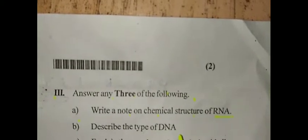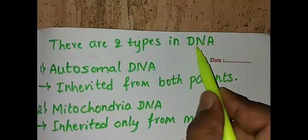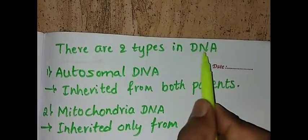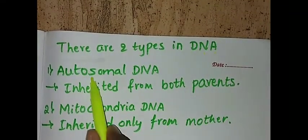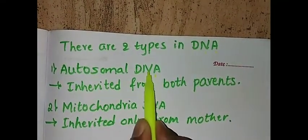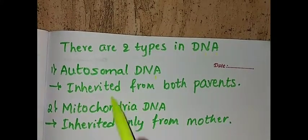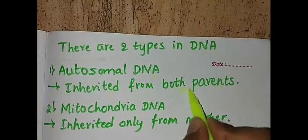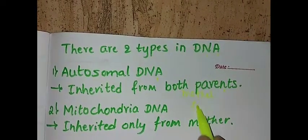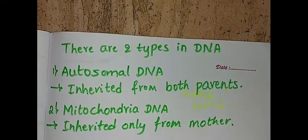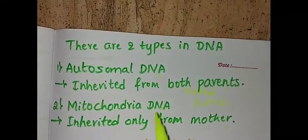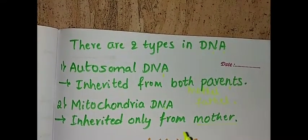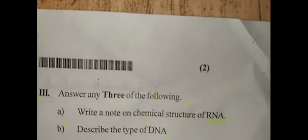The next question is describe the types of DNA. DNA is deoxyribonucleic acid. There are two types: one is autosomal DNA, in which the characters are inherited from both parents, mother and father. The second one is mitochondrial DNA, which is inherited only from the mother, not from the father.